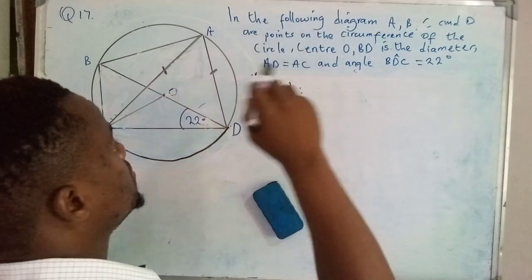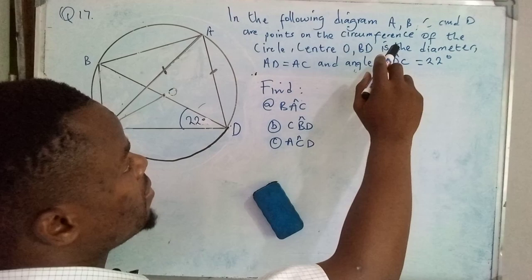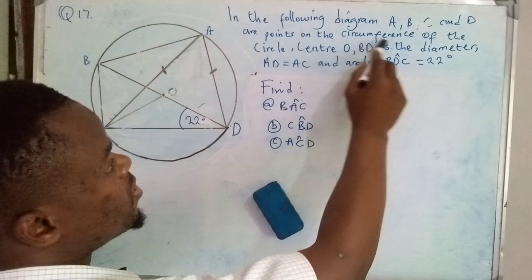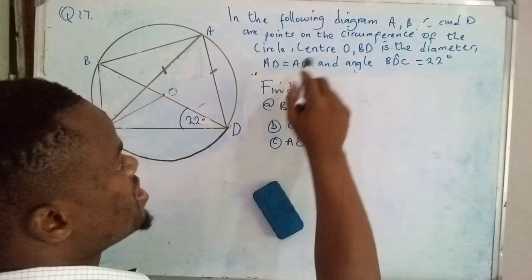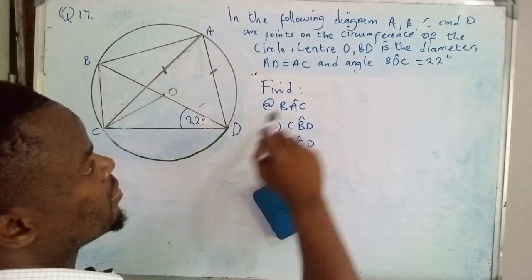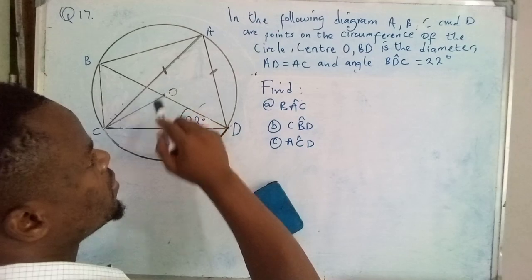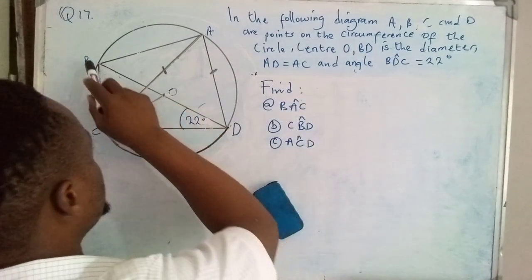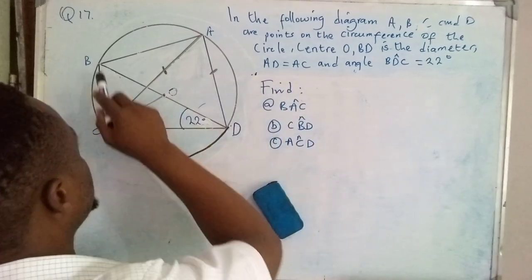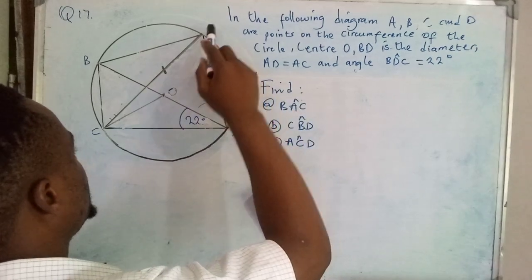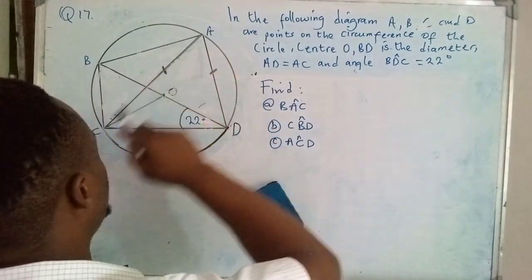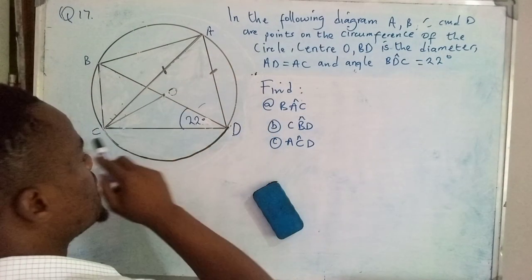So the problem is: In the following diagram, A, B, C, and D are points on the circumference of the circle, center O. BD is the diameter, and AD is equal to AC. These two lines are equal, and angle BDC is equal to 22 degrees.